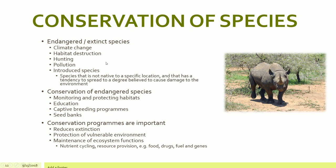Another area to consider is the conservation of species. Certain endangered or nearly extinct species exist because of climate change, habitat destruction, hunting, pollution, or introduced species — species not native to a location that spread and damage the environment and other organisms. Conservation of endangered species requires monitoring and protecting habitats, educating people on the importance of conservation, captive breeding programs, and seed banks for plants to maintain plant genetics. Conservation programs are important because they reduce extinction, protect vulnerable environments, and maintain ecosystem functions.